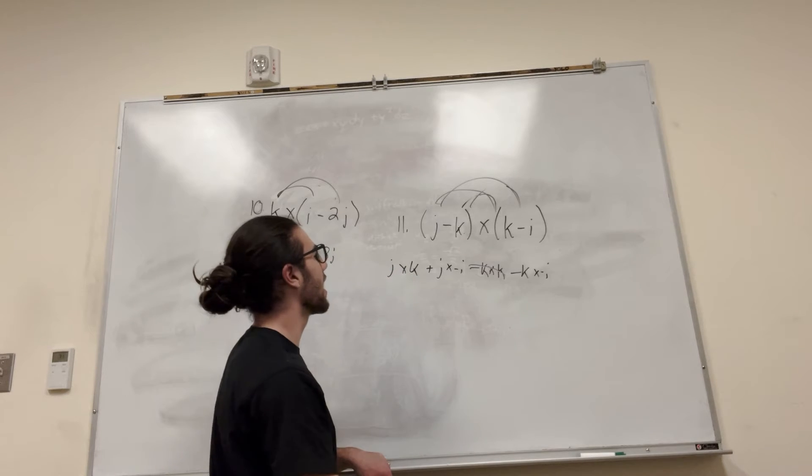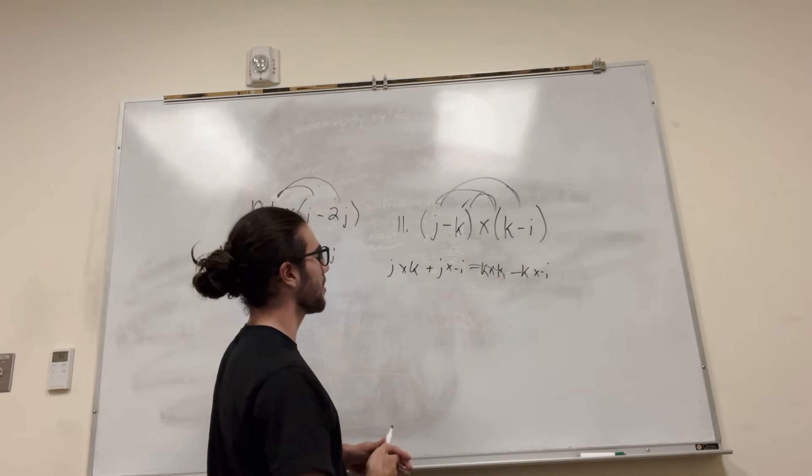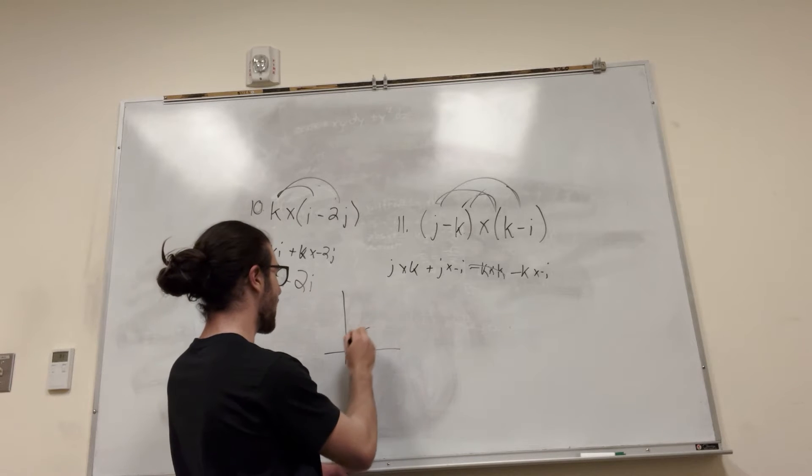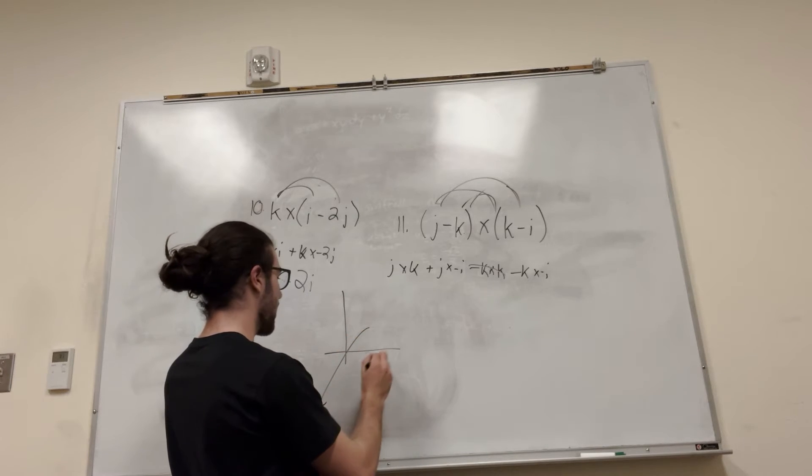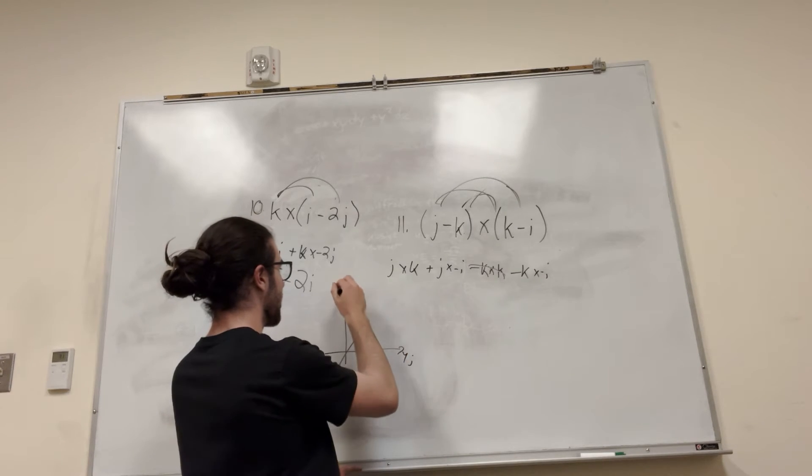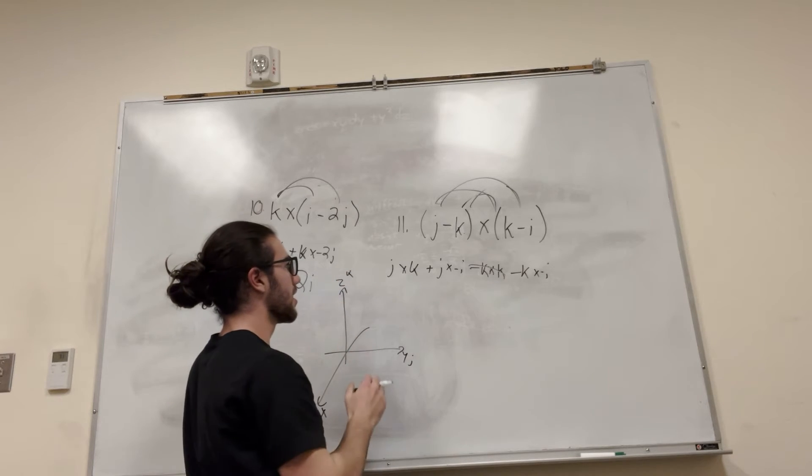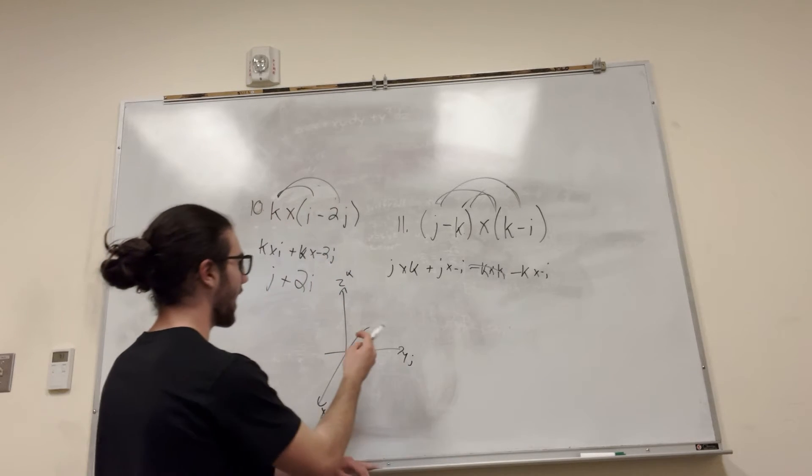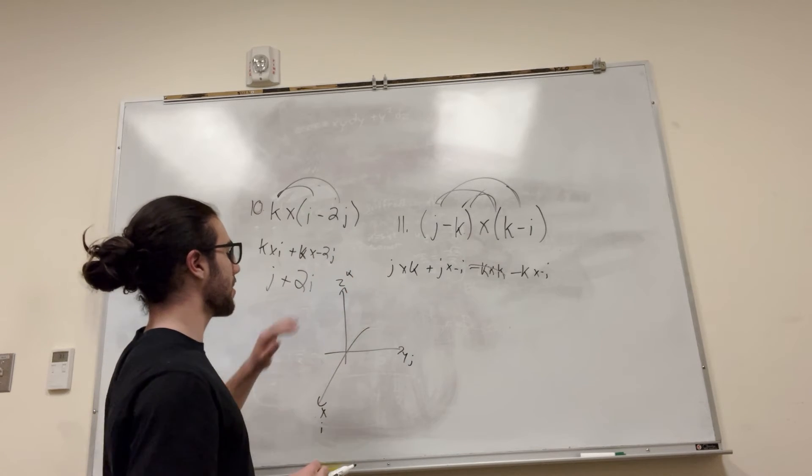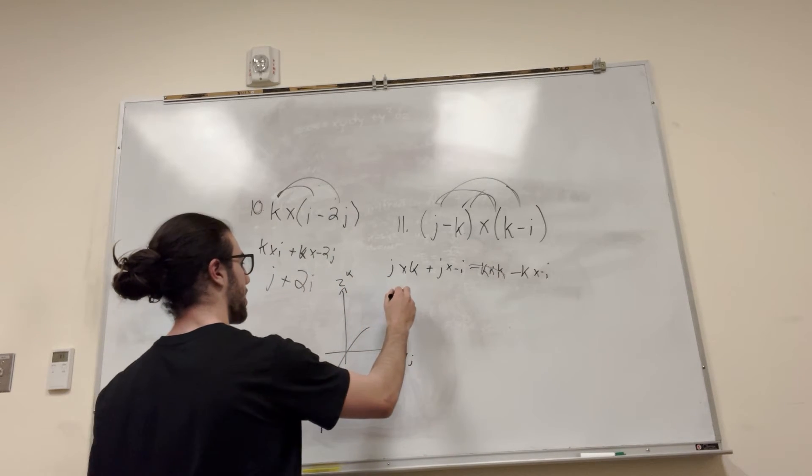Alright, so now we've got j and k. So let's do the same thing. Let's make this graph. I actually kind of like this graph. This is x or i, this is y or j, this is z or k. Alright, so j and k, it's going to be this plane. So it's going to be orthogonal to this plane, and it's going to be the x, which is i. So this is going to be equal to i.